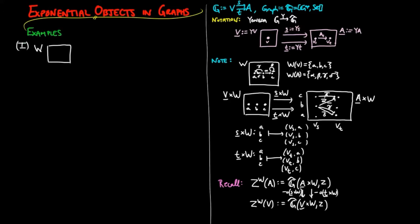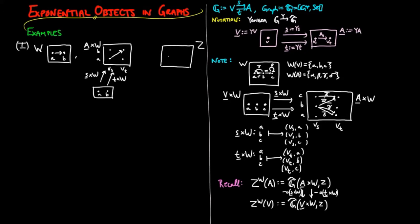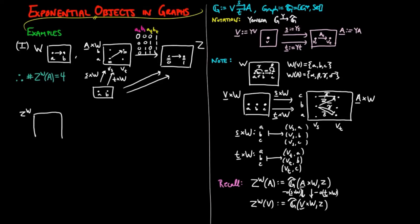For example, let W be an isomorphic copy of the representable of a. Then underline a × W is the following graph. Precomposition by the following morphisms will give us the source and target boundaries. So if z is another isomorphic copy of the representable of a, we see there are four morphisms from underline a × W to z, where a_s and b_t must be mapped to zero and one respectively, while we are free to map b_s and a_t to either zero or one. Therefore there are four arcs in the exponential object. Since there are also four morphisms from underline v × W to z, there are four vertices as well, given by pairs of z vertices where a and b respectively are sent. Notice that the source boundary of the exponent gives us the first two columns here and the target boundary gives us the last two columns here.